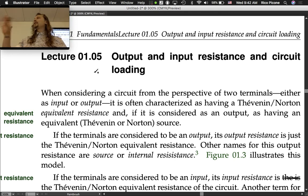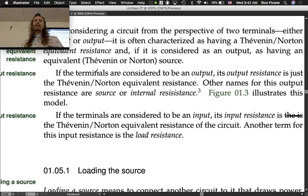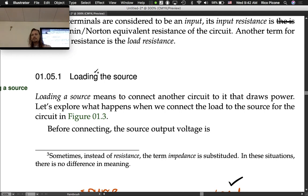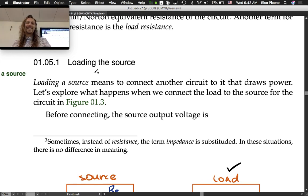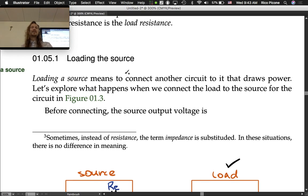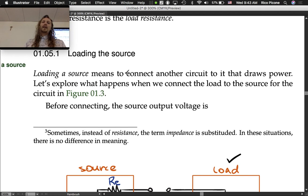But they're mainly there to help us simplify a model so we don't need to have a big complicated model for everything. Loading a source means to connect another circuit to it that draws power. So you've got the circuit that is like the power grid and you connect your toaster to it. You're loading the power grid circuit.